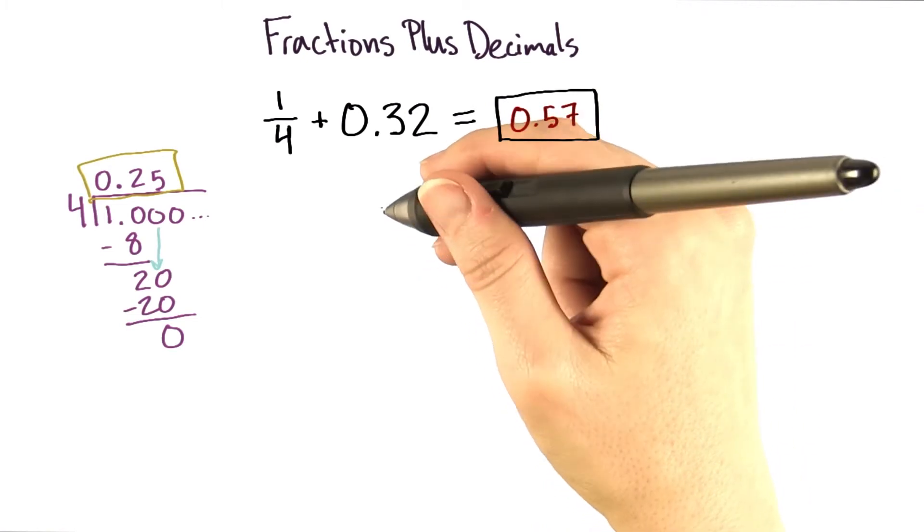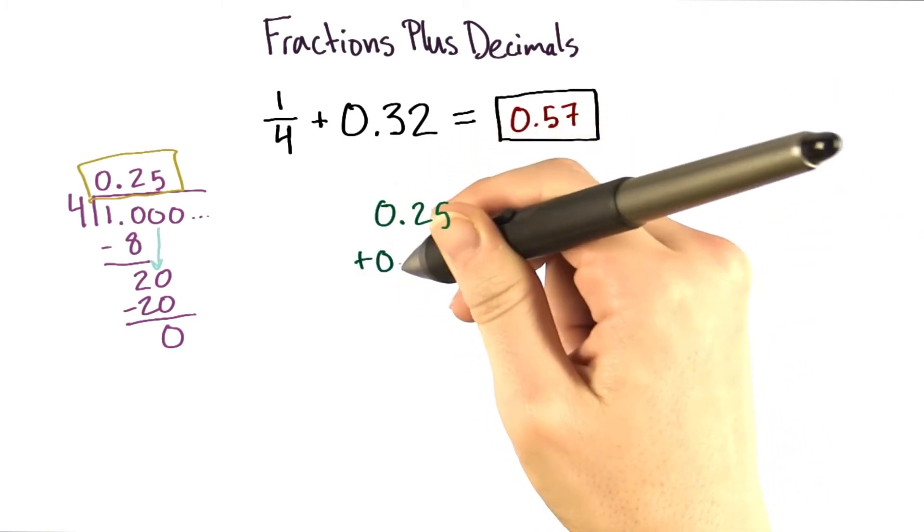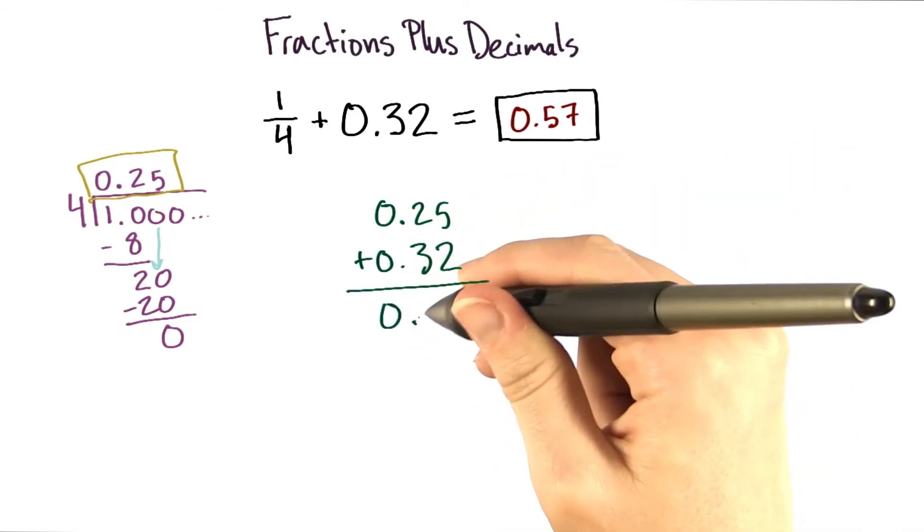So 1 fourth plus 0.32 is really the same thing as 0.25 plus 0.32. And what we're left with is 0.57.